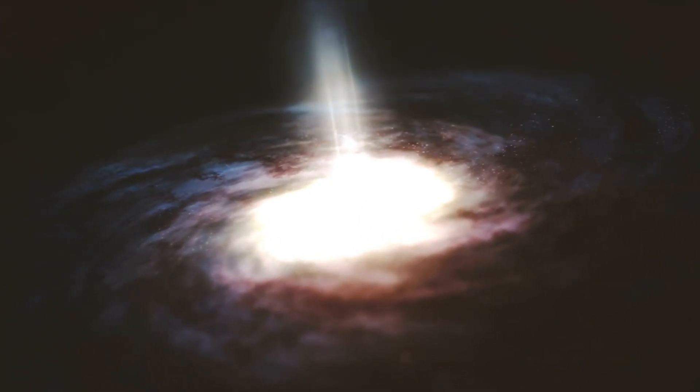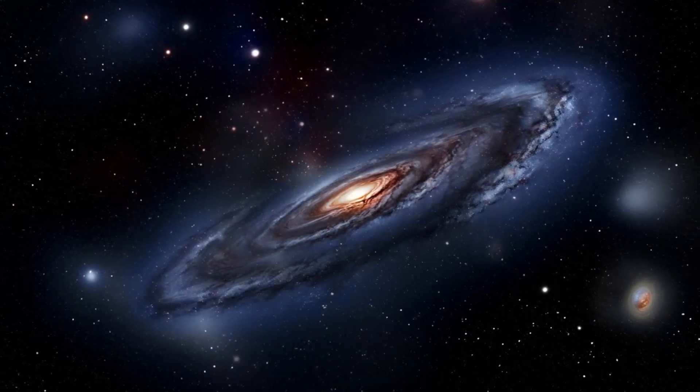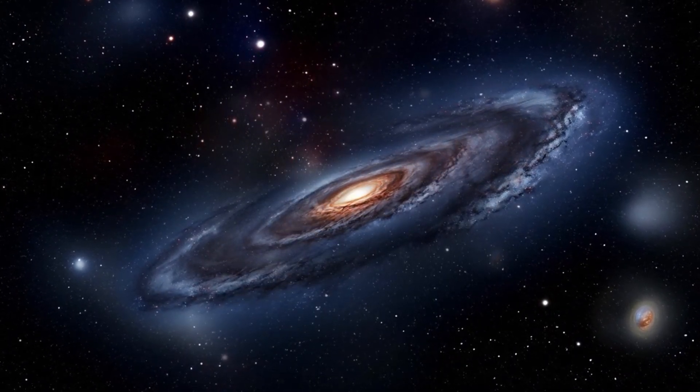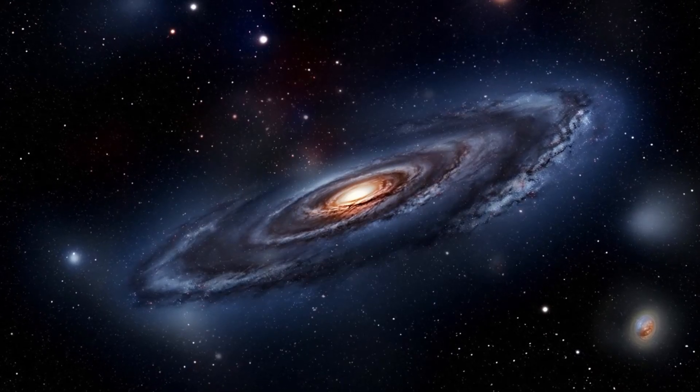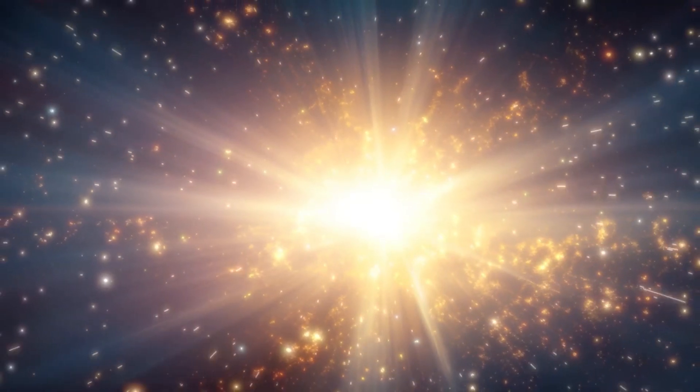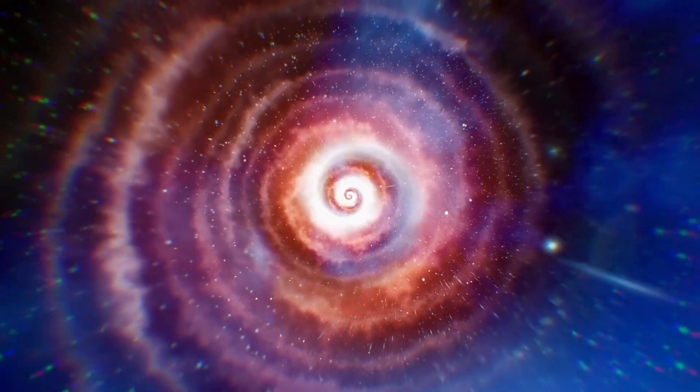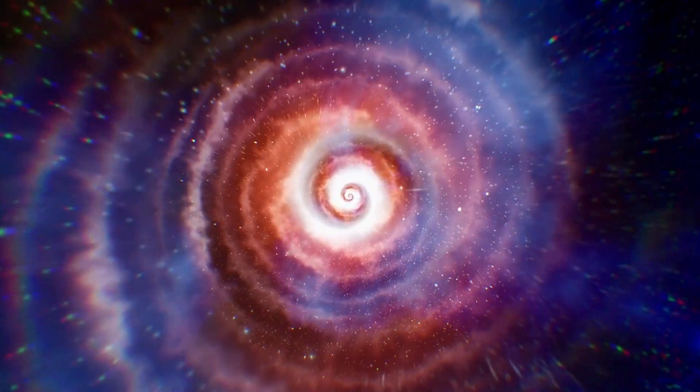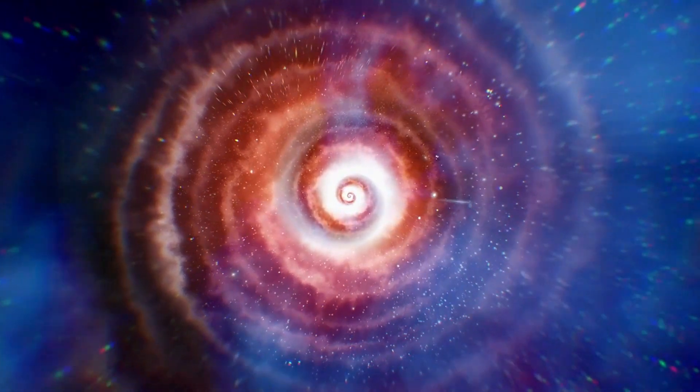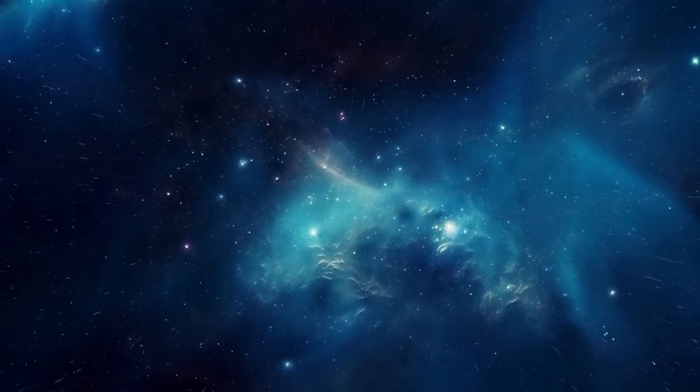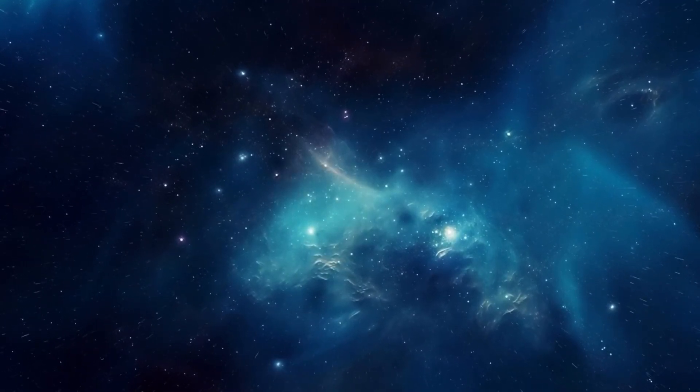You may ask why we can't simply see all that exists in the universe. There are a few explanations for this limitation. Most importantly, light, the fastest thing in the universe, still takes time to travel through space. This means when we look at distant objects, we're essentially looking into the past. It's like looking through an endless time machine, stretching back through the history of our universe.